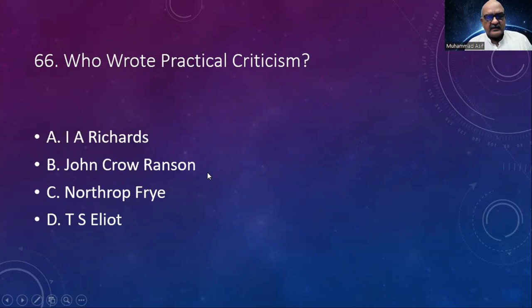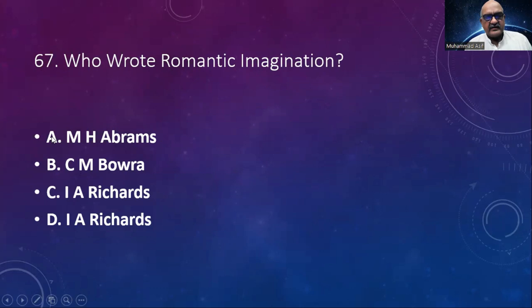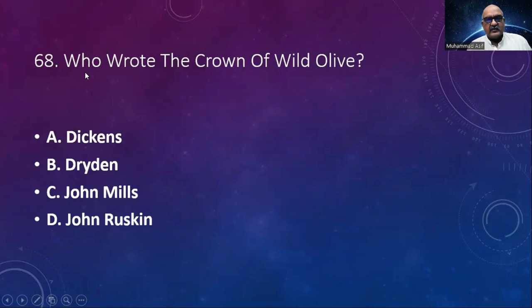Number 67: Who wrote The Romantic Imagination? Options: M.H. Abrams, C.M. Bowra, I.A. Richards. The answer is C.M. Bowra. Number 68: Who wrote The Crown of Wild Olive? Options: Dickens, Dryden, John Mills, John Ruskin. The answer is John Ruskin.